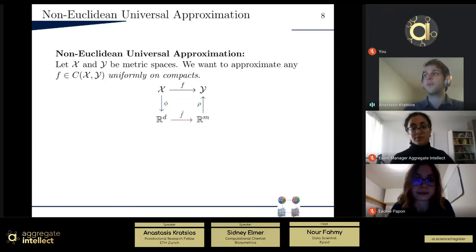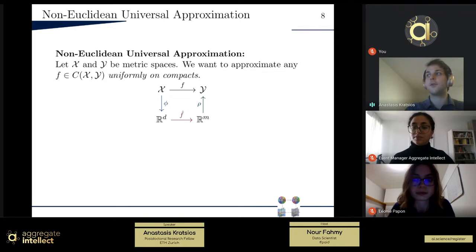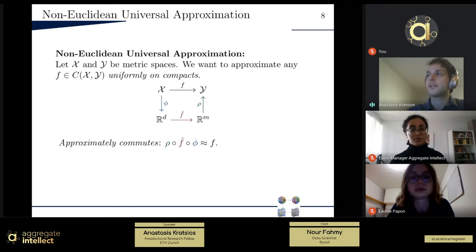So the idea is we just want to repurpose our old tools, these neural networks, whether they're shallow or deep, in this case, deep for us. And we want to do that by basically going around this little diagram here. So what does the diagram present? So intuitively, we want to approximate F, which means we want to make this diagram approximately commute. So what does that mean?